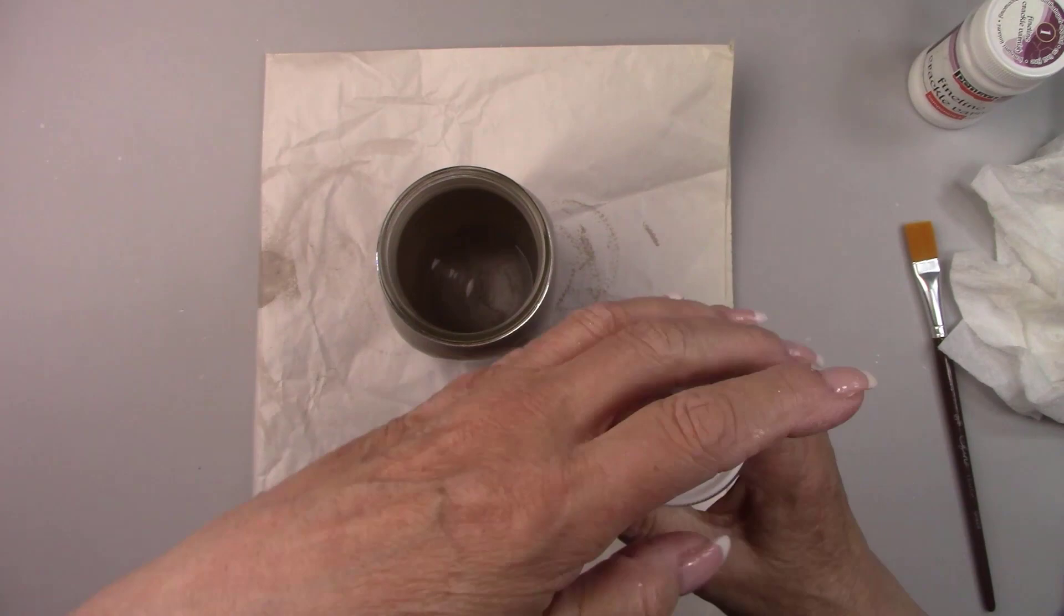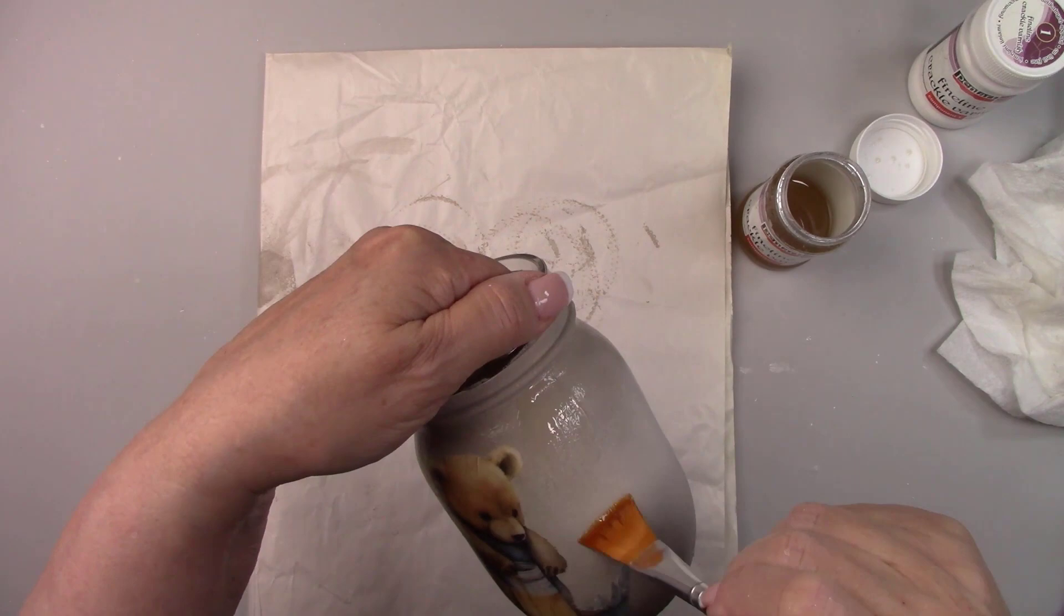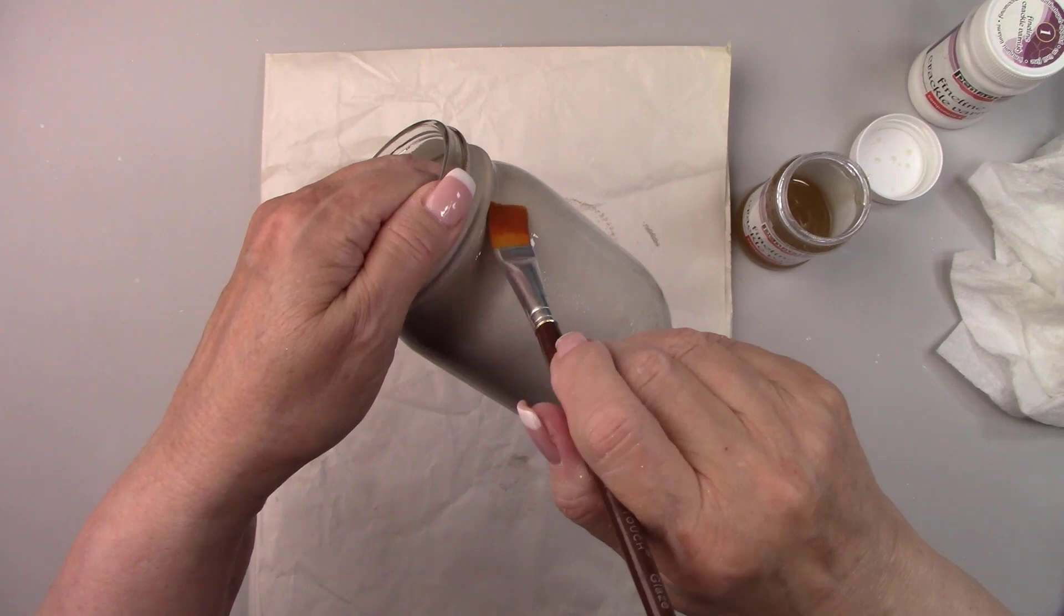Now I'm adding step number two. This component is an amber color. Apply this in thin even strokes. If there is a drip or buildup anywhere you'll see it when it dries.